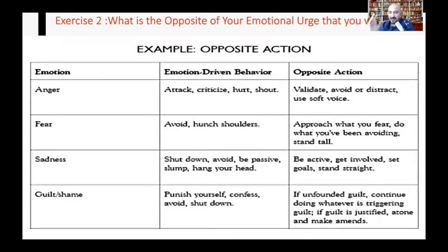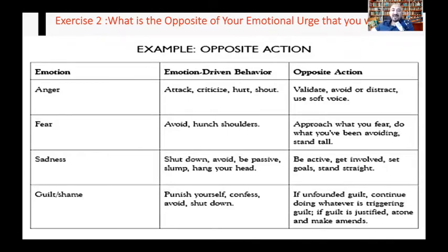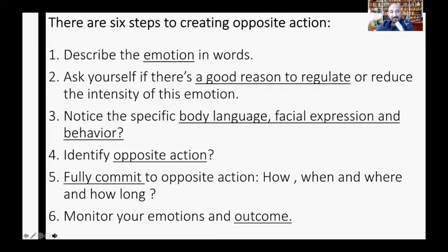If the guilt is justified, think about it, try to make amends, fix past errors. The exercise here is: tell me one or two emotions you struggle with, tell me the behavior usually associated with that feeling, and tell me what the opposite actions would be that you will do in future when you experience that thought or feeling.